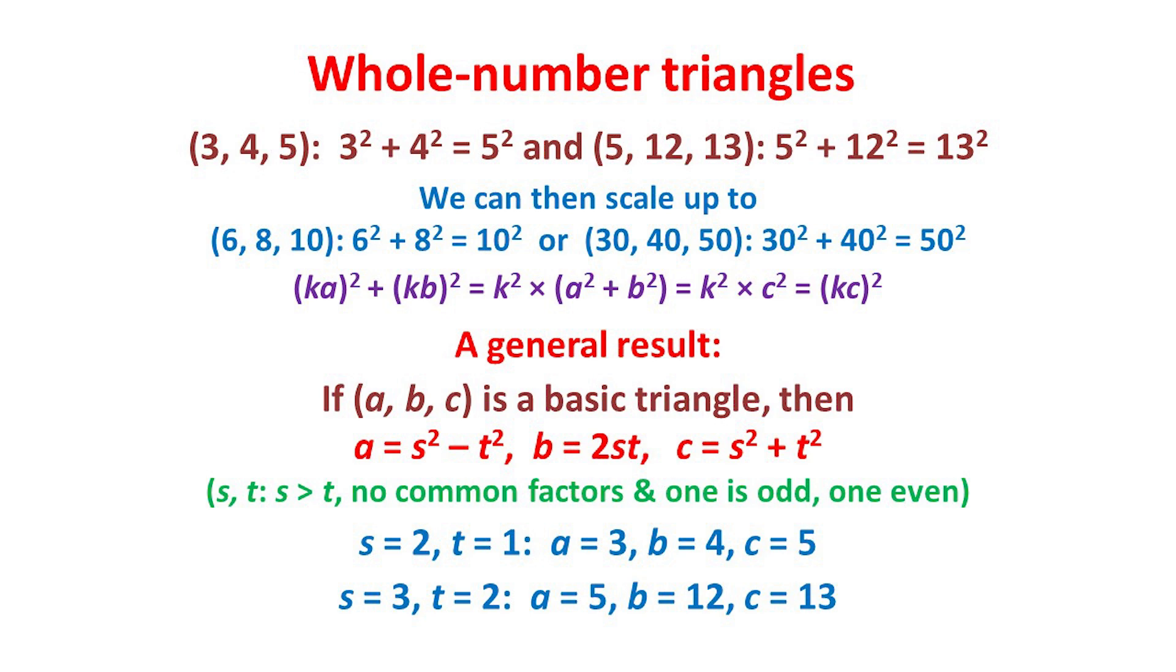Any whole number example can then be scaled up to give larger right-angled triangles with whole number sides. For example, if we double the lengths of the sides of the basic 3, 4, 5 triangle, we get the right-angled triangle with sides 6, 8, 10.